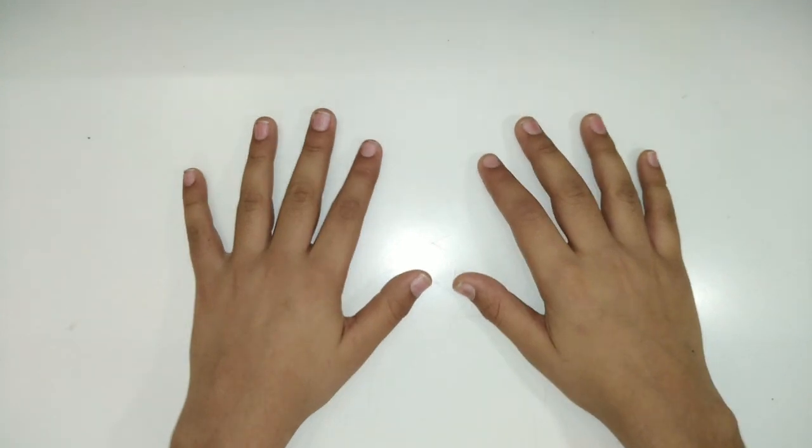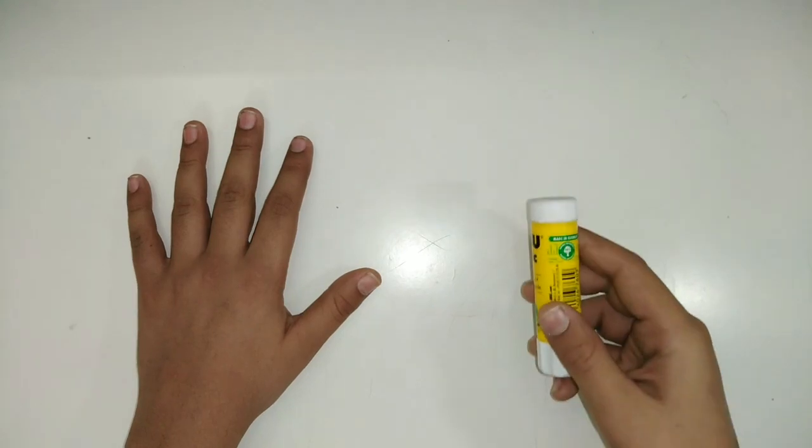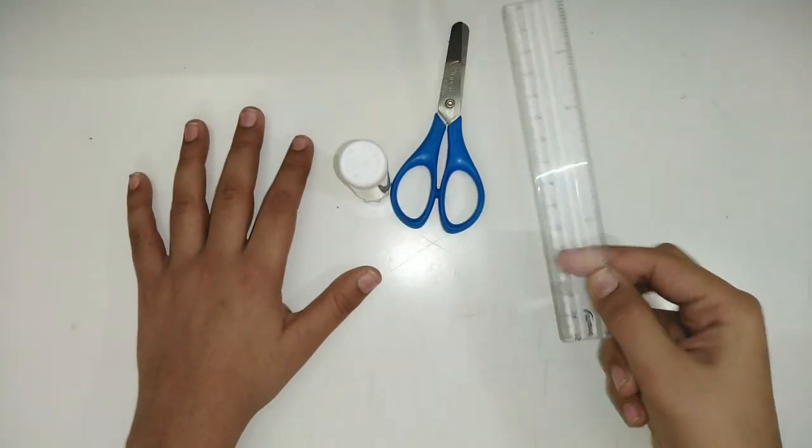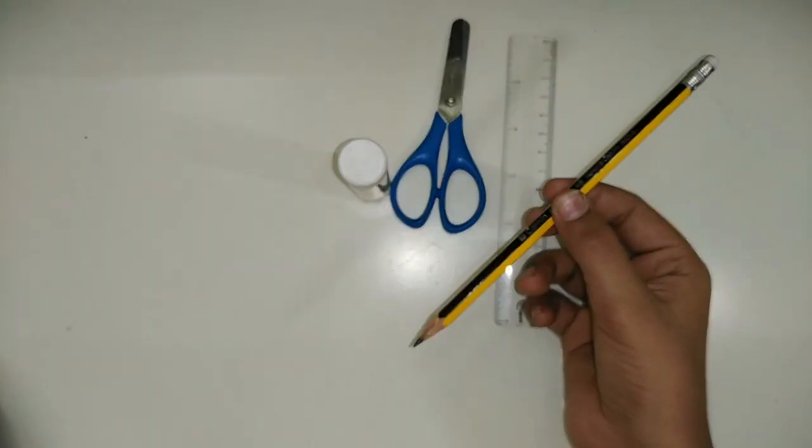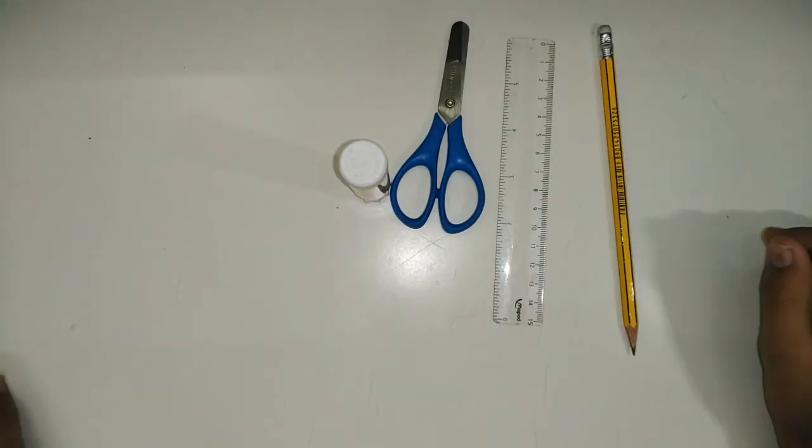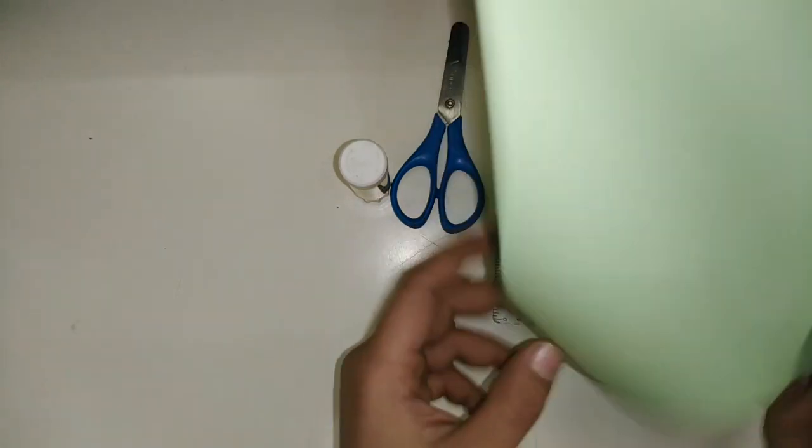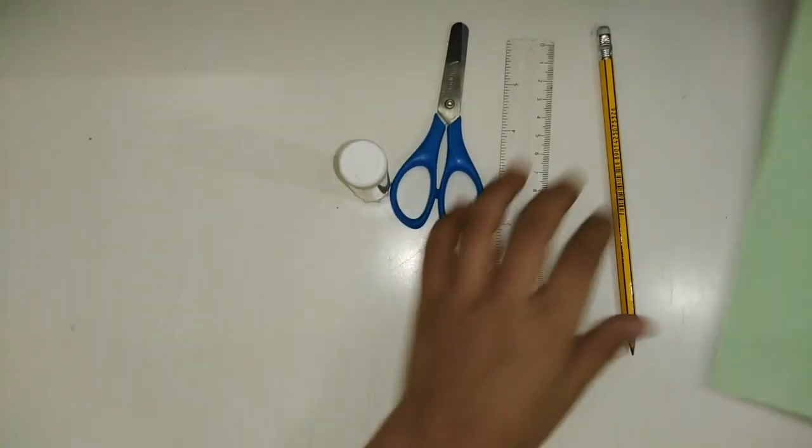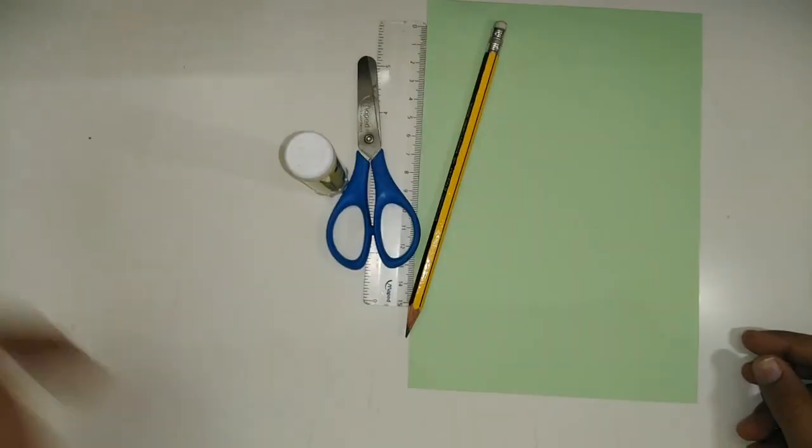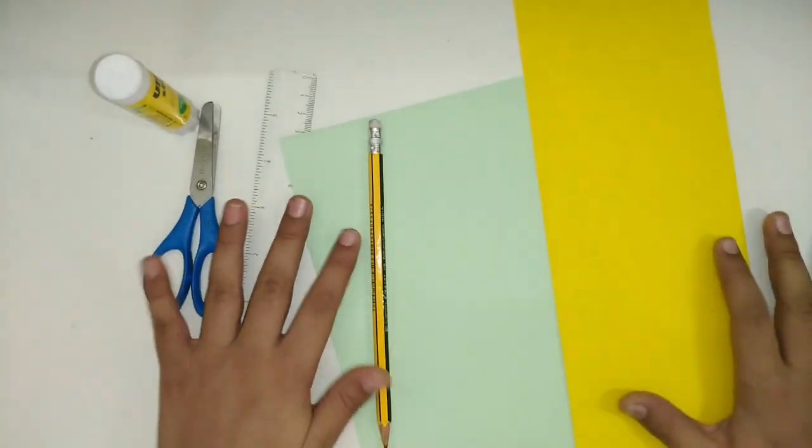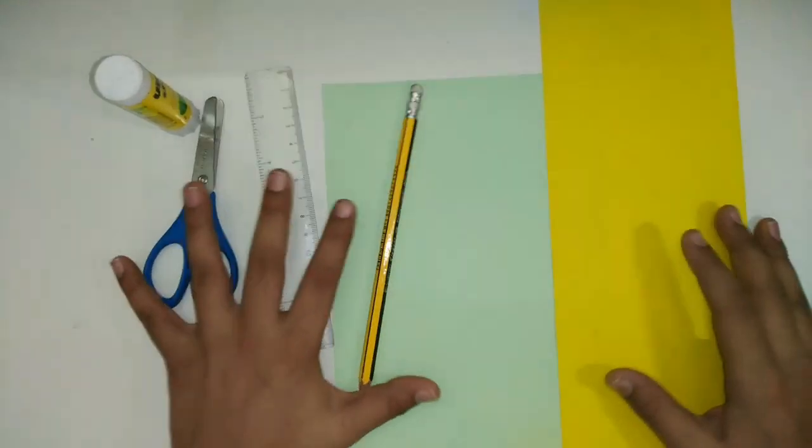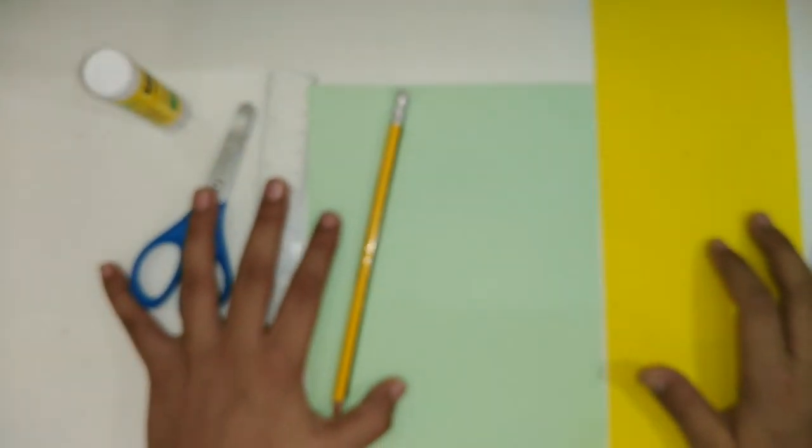Alright, so let's start. The accessories you'll need for this project are a glue stick, scissors, a scale, a pencil, and you'll also need a green sheet of paper and a yellow sheet.